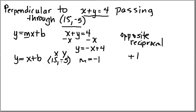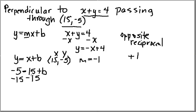I plug in 15 for x and negative 5 for y, so I get negative 5 equals 15 plus b. Now I solve for b by subtracting 15 from each side. 15 minus 15 is 0, and negative 5 minus 15 gives me negative 20. So b equals negative 20.